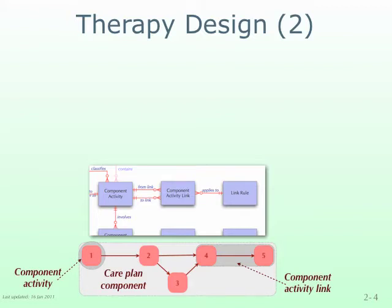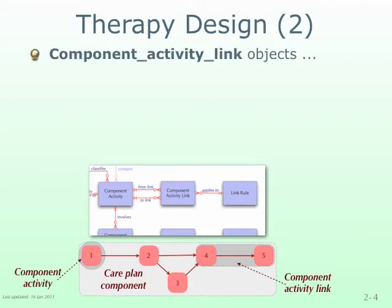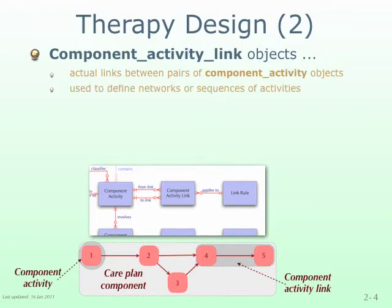First, there are the component activity link data objects that represent links between pairs of component activity objects which indicate their functional dependency and can be used to define networks, hierarchies, or simple sequences of activities as illustrated in this diagram.